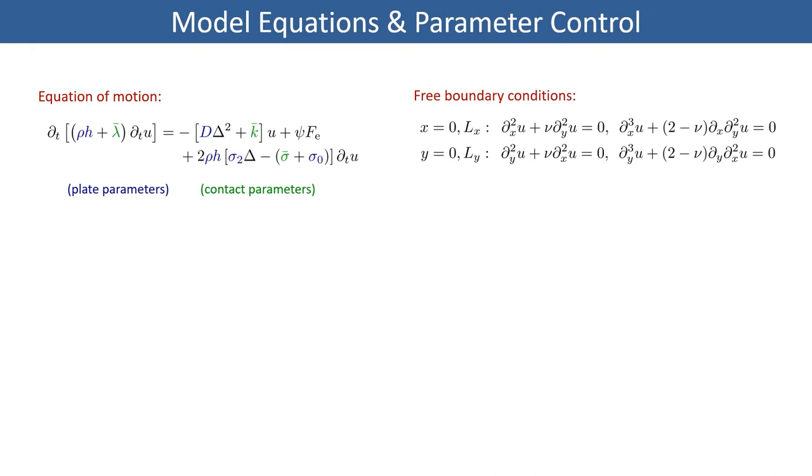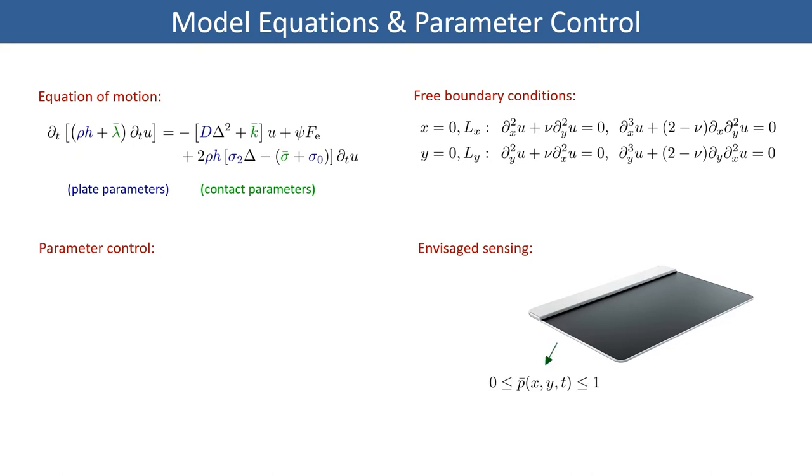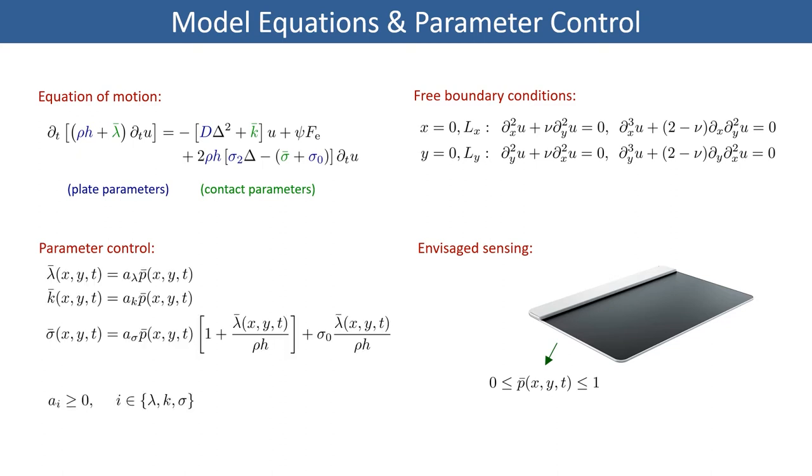One question immediately arising here is how are the distributed contact parameters actually controlled? This has to be considered in conjunction with the sensor interface, which here is envisaged to be a high resolution 2D touch patch controller, such as the Sensel Morph we see on the right hand side here. This will give a pressure map P, that we can directly use to drive the contact parameters with, essentially through a simple linear mapping. In this, the coefficients can be configured for a specific type of interaction.